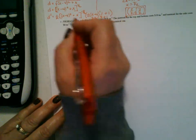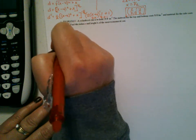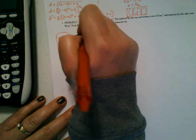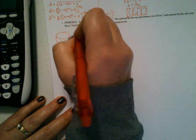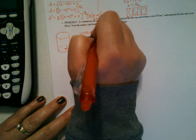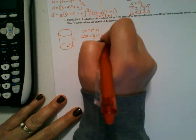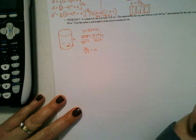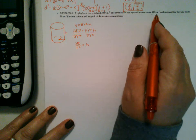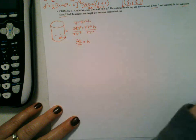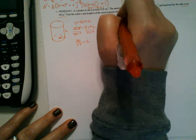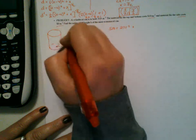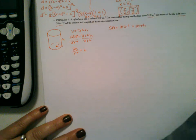Finally, the last one: a cylindrical can. Volume equals area of the base times height, and they say the volume is 20π. So πR²H = 20π. Divide both sides by πR²: H = 20/R². The material for the top and bottom costs $10 per square meter, and the material for the sides costs $8 per square meter. Think of the surface area: the top and bottom are two circles, so 2πR², and the sides are 2πRH.